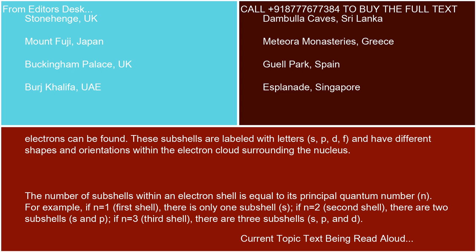The number of subshells within an electron shell is equal to its principal quantum number, N. For example, if N equals 1 (first shell), there is only one subshell: S. If N equals 2 (second shell), there are two subshells: S and P. If N equals 3 (third shell), there are three subshells: S, P, and D.